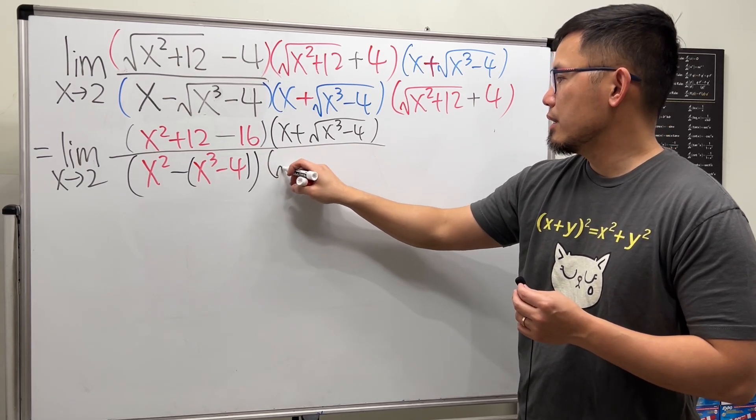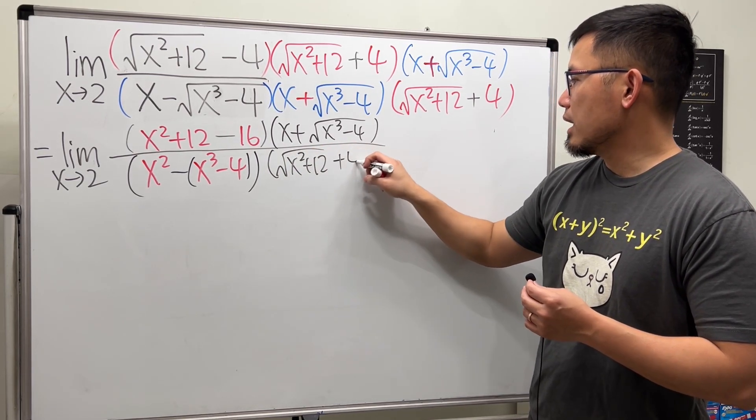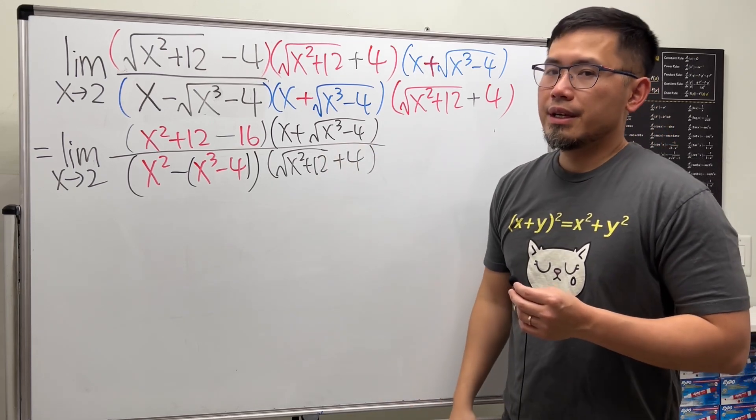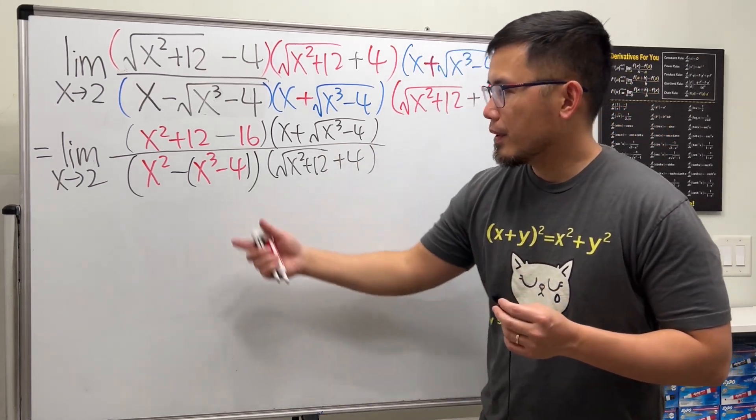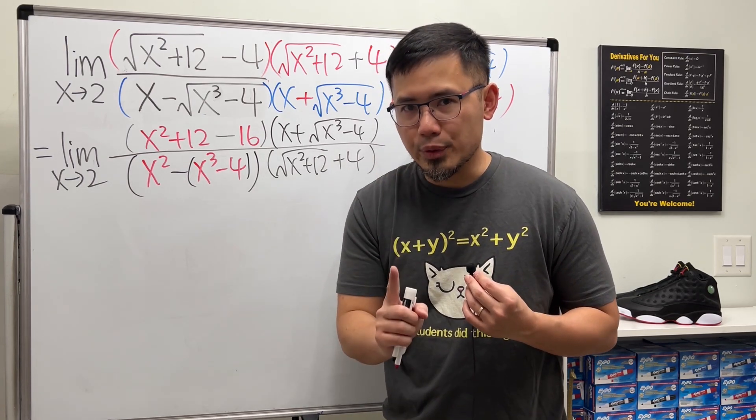And then the bottom here, square root x squared plus 12, and then plus 4. And here's the deal. We are going to work this out and work that out, factor as much as possible.